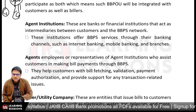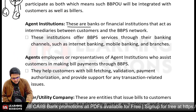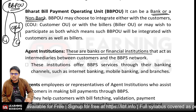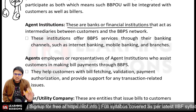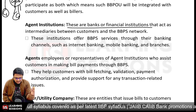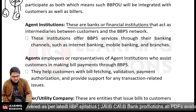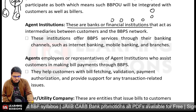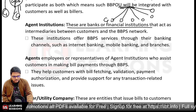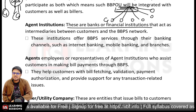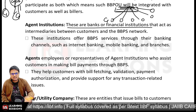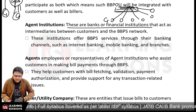Agent institutions can be banks or financial institutions acting as intermediaries between the BBPOU and customers. They offer services through their banking channels — for example, a chain with a hundred departmental stores acting as an agent institution connecting customers with the payment channel. Agents are employees or representatives of agent institutions who assist customers in making payments and fetching bill details.